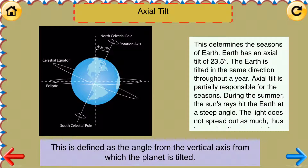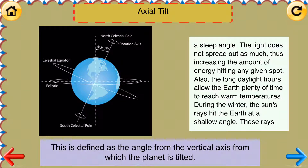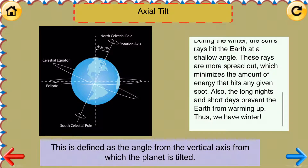The light does not spread out as much, thus increasing the amount of energy hitting any given spot. Also, the long daylight hours allow the Earth plenty of time to reach warm temperatures. During the winter, the sun's rays hit the Earth at a shallow angle. These rays are more spread out, which minimizes the amount of energy that hits any given spot. Also, the long nights and short days prevent the Earth from warming up. Thus, we have winter.